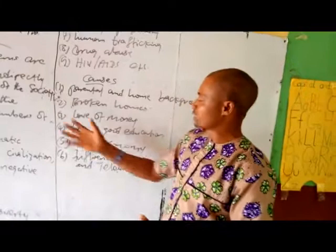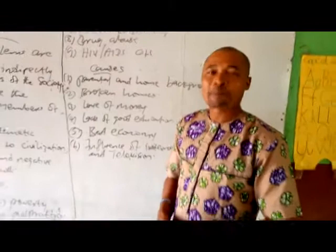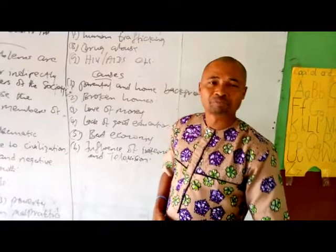Number three: love of money. Many are so eager to make money by all means. Thereby, some resort to evil activities like kidnapping and oil bunkering in order to make money.